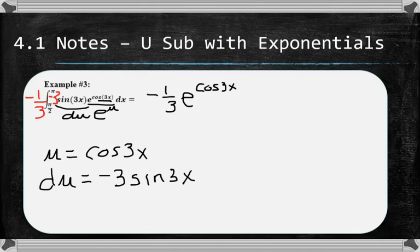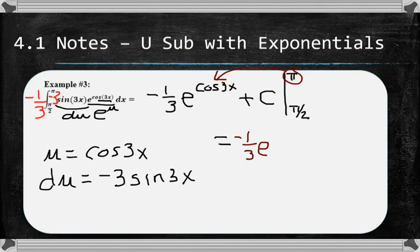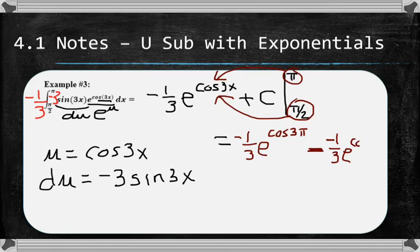Now we don't really need to worry about the plus c if we're doing definite integrals. You can put it in for now just to see what happens, but you actually don't need it and you'll see why in a moment. Now the correct notation for this is that at the end we put a straight line like this and then we put the limits of integration on the top and the bottom of the line, and this basically means plug in pi, plug in pi over 2, and then subtract the answers. So what you're going to do is you are going to take this pi and plug it in. So negative 1 third e to the cosine 3 pi, and then you're going to plug in the bottom number. So minus negative 1 third e to the cosine 3 pi over 2.